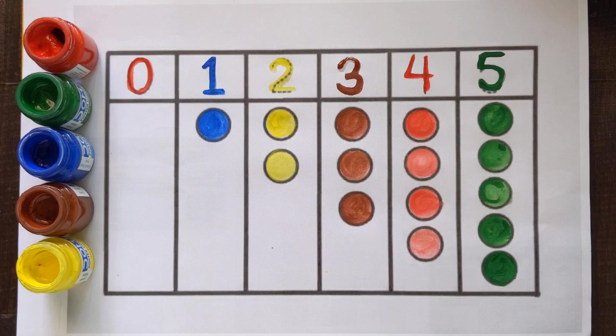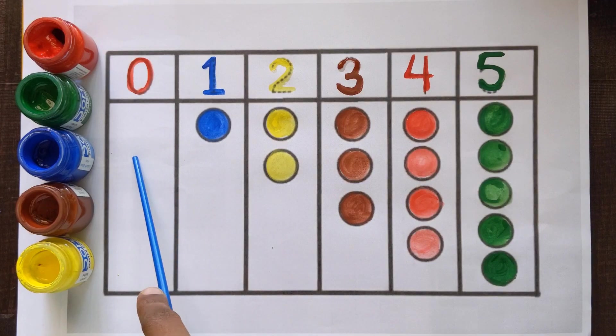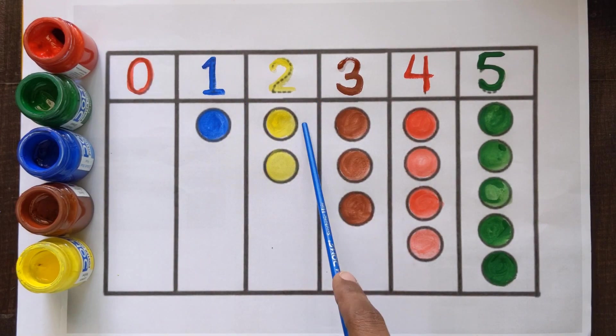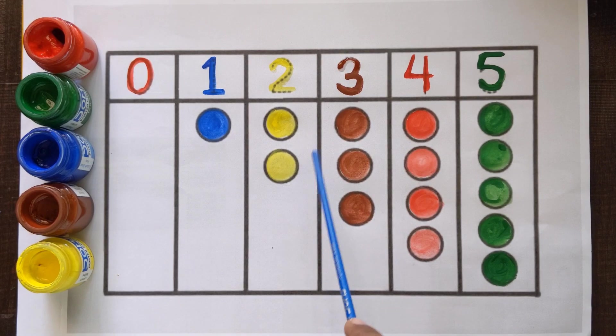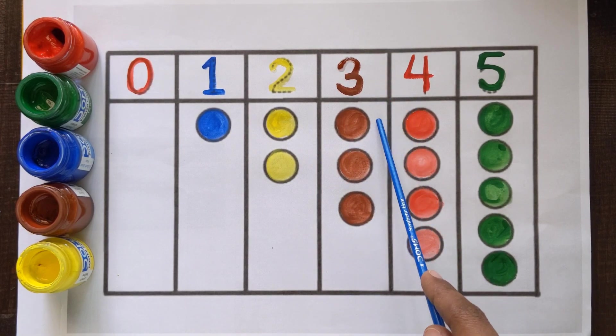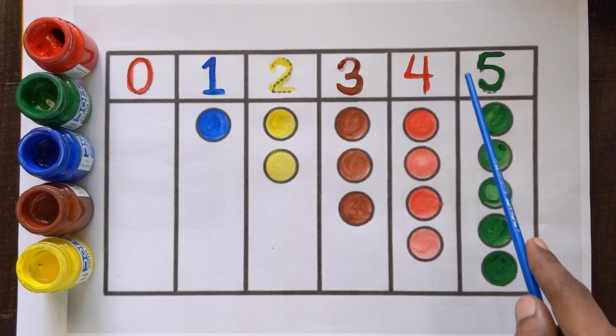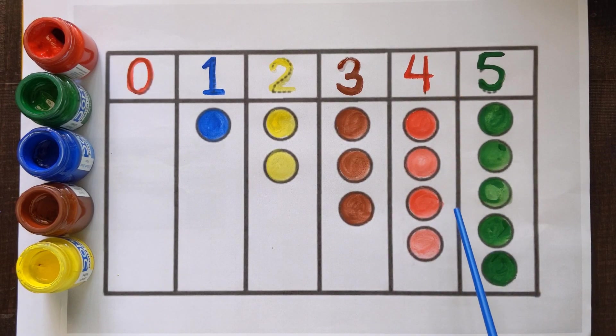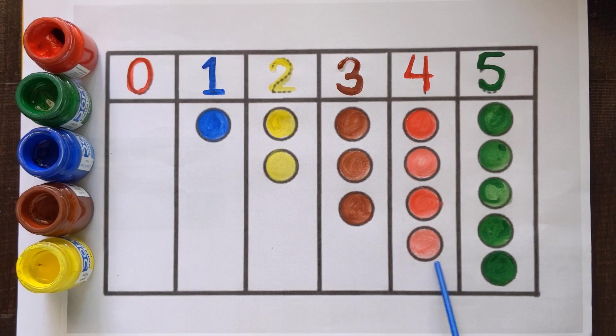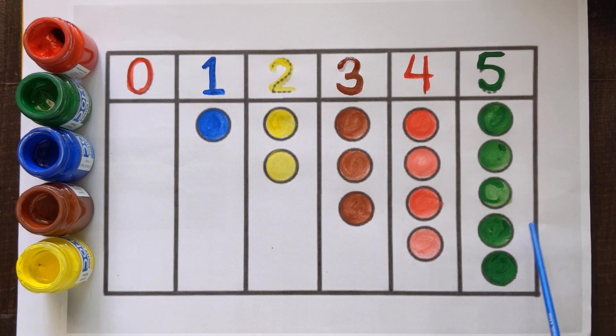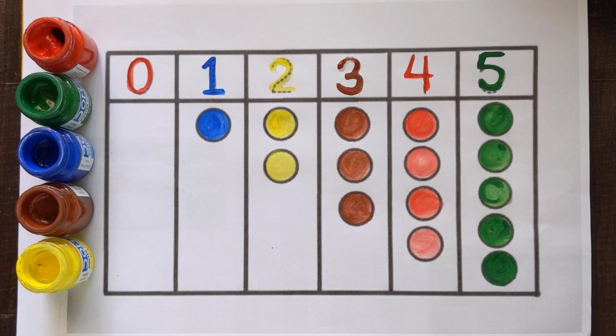Hello guys, welcome to learn with Oviya. Today we will learn 0 means nothing. 1, 1 ball. 2, 1, 2, 2 balls. Number 3, 1, 2, 3, 3 balls. Number 4, 1, 2, 3, 4, 4 color balls. Number 5, 1, 2, 3, 4 and 5, 5 color balls. So, let's get started.